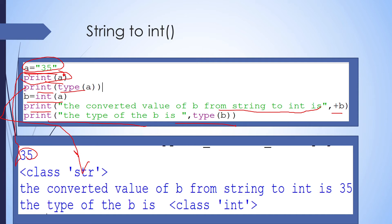When we convert the string to integer, b = int(a). We use the int function with the variable we want to change. The converted value of b from string to int is 35. Now to identify the type of b, we use type(b), and the type of b is class int.